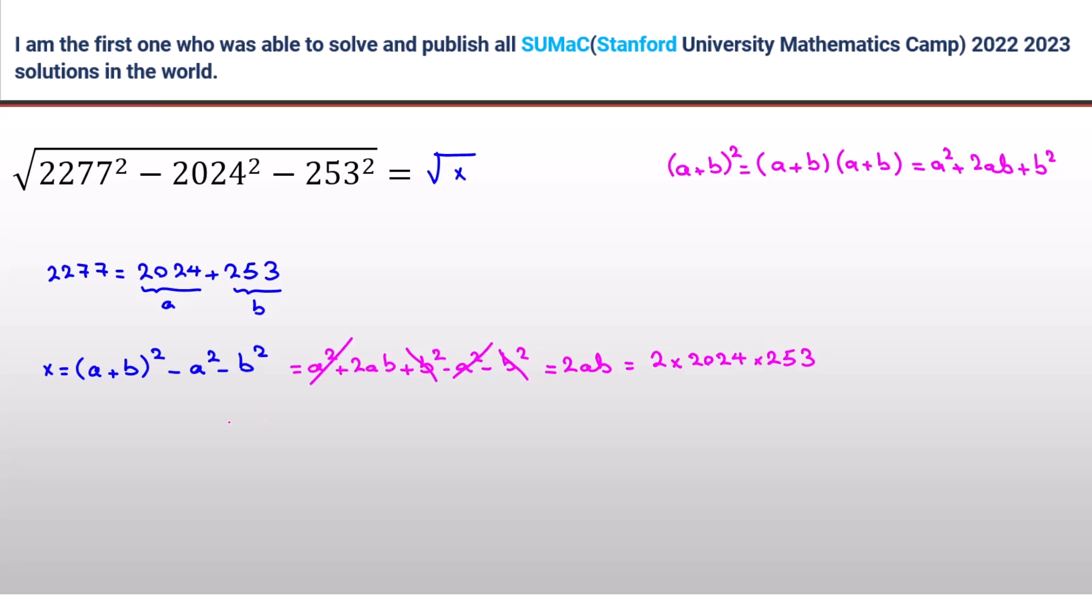Now let's prime factorize 2024. 2024 is 2 times 1012. You can also check the last three digits, it's a multiple of 8. So in the first step we can divide it by 8.